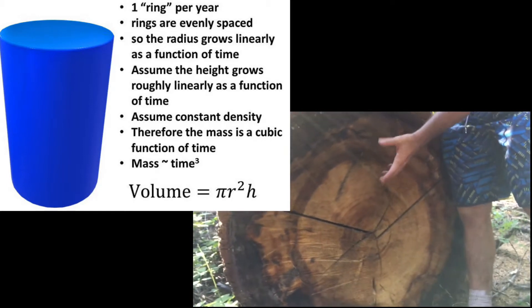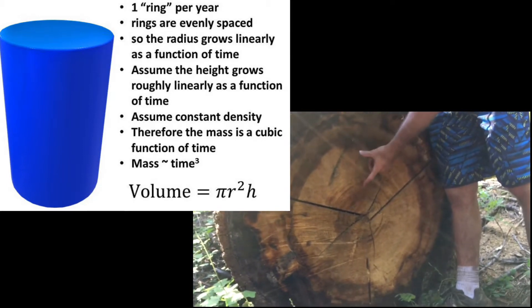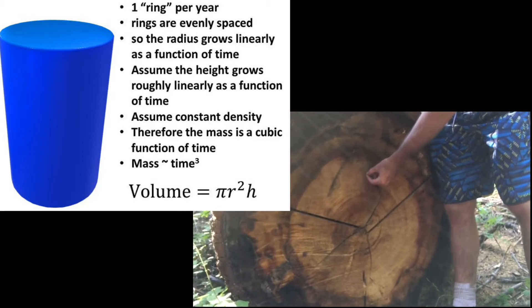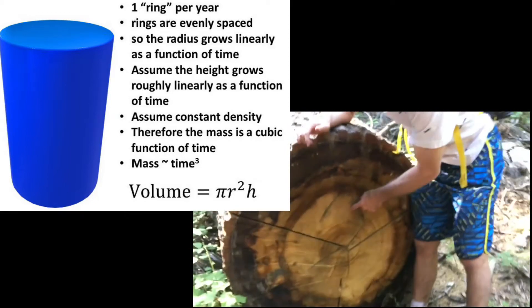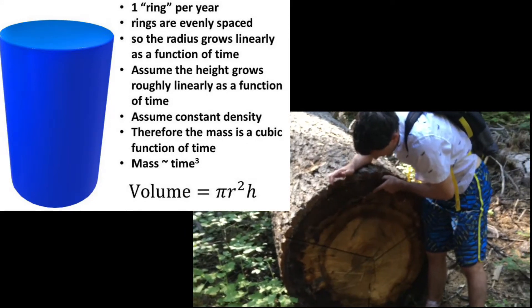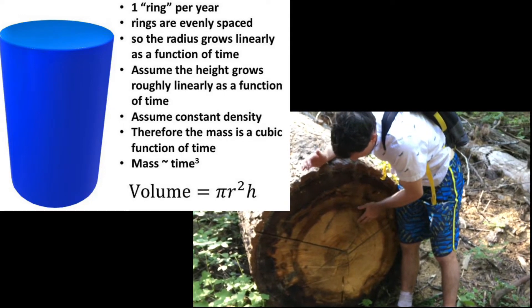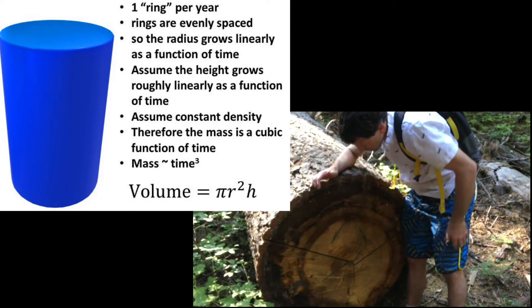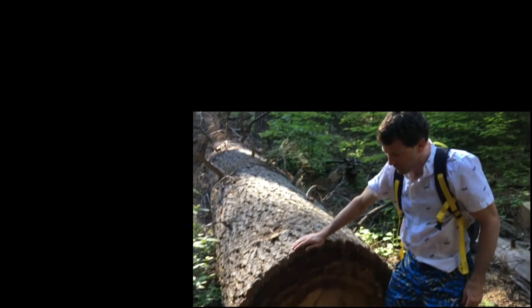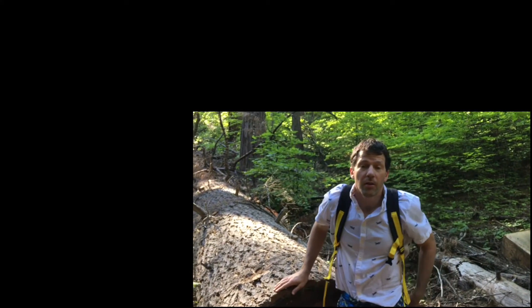But the thing we notice is that the spacing between the rings is uniform. You may see some variation—if there was a lot of rain or growth that year it'll be thicker, less growth it'll be thinner—but on average they're the same width apart. There's no trend, they don't tend to get wider or narrower. So the radius grows linearly as a function of time.